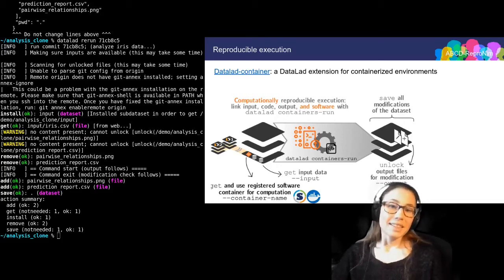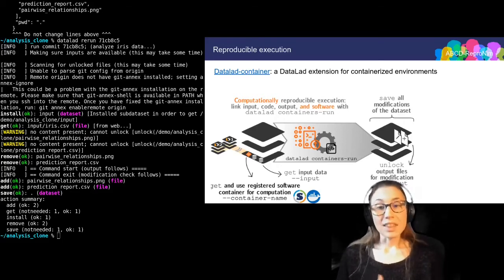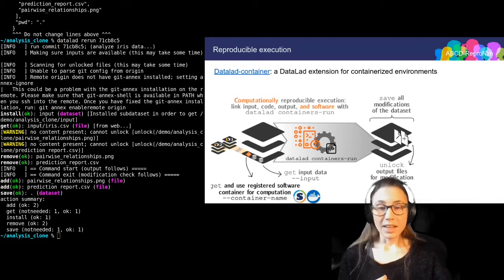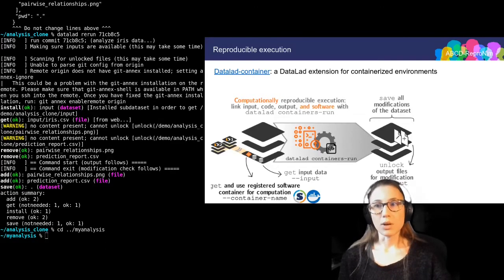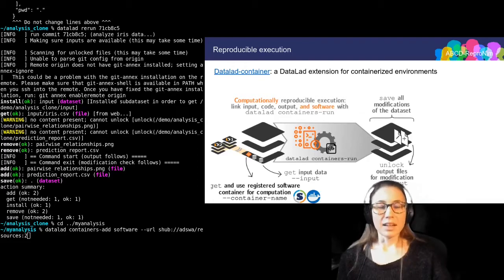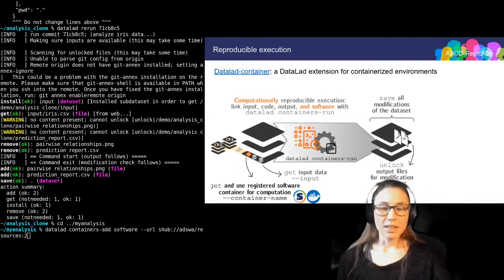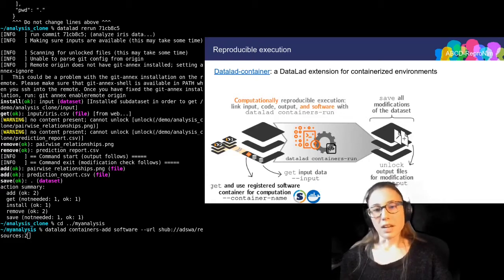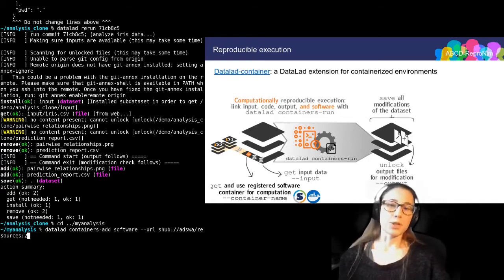This extension allows DataLad to work with software containers and thus includes software environments as digital provenance. I have already installed it, and here I'm going to demonstrate how I'm using it. So first of all, I'm going back into my own analysis dataset, and now I'm using the datalad containers-add command to register a software container into my dataset. I can register any number of container images. Here you can see that I am registering an image from a Singularity Hub URL, and I'm saving it under the name 'software' in my dataset.